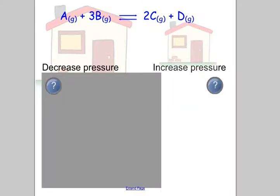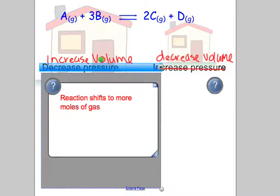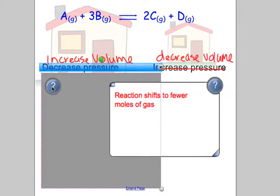What about pressure? Whenever I see a question in terms of pressure, I just change it in my head to volume. So 'decrease pressure' means increase in volume — my house is bigger, so I shift to the side with more moles of gas. If I increase pressure, that's a decrease in volume — my house is getting smaller, and I shift to the side with fewer moles of gas.